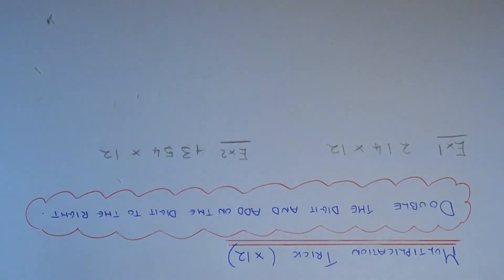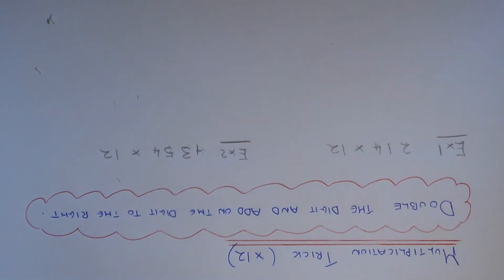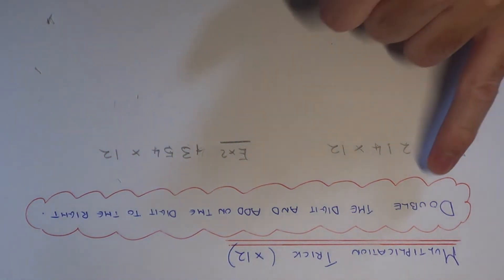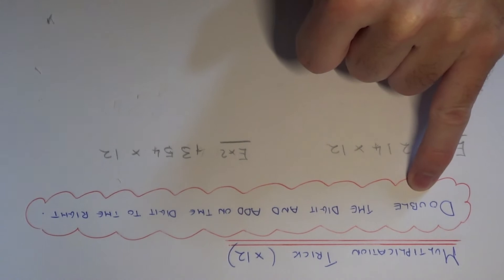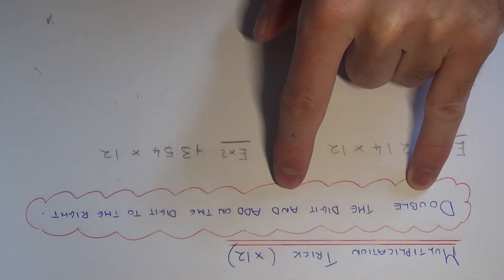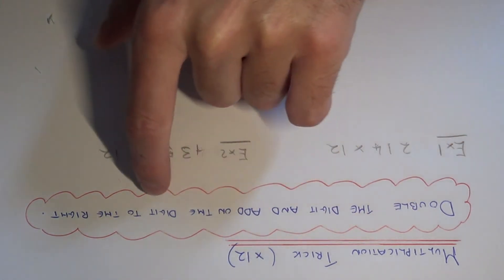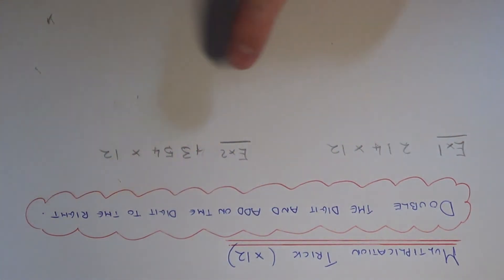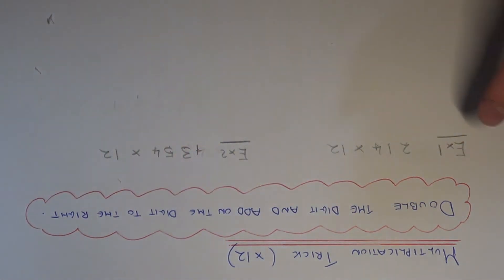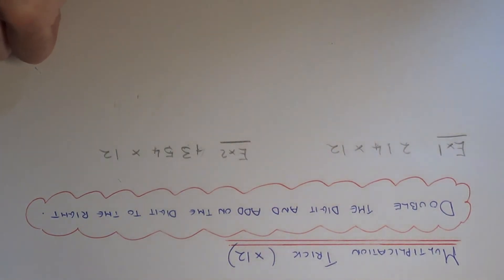Today I'm going to show you a cool little trick to multiply a number by 12 without having to know your 12 times tables. The rule you need to remember is to double the digit that you're on and add on the digit to the right of the number. This will make sense in a minute.